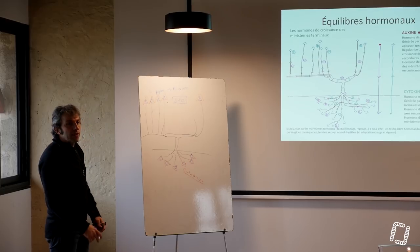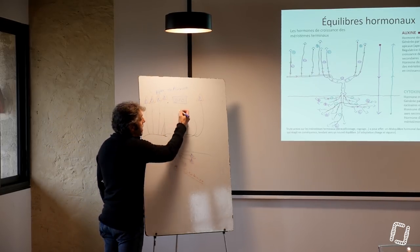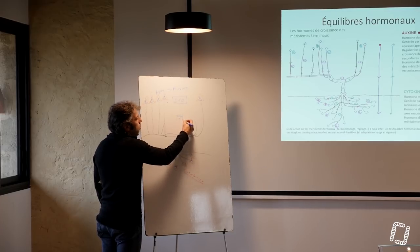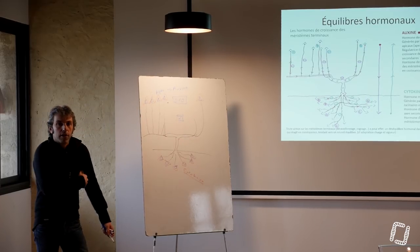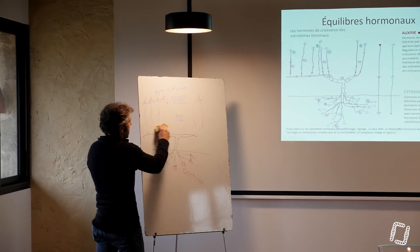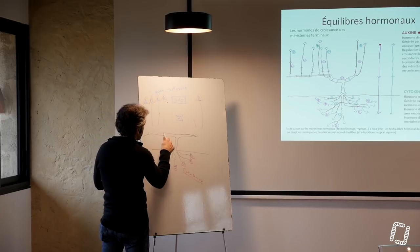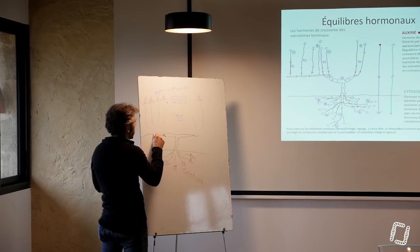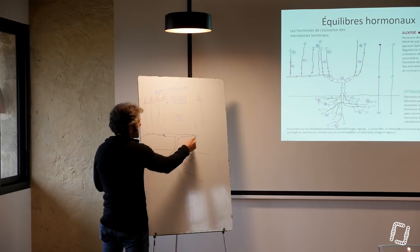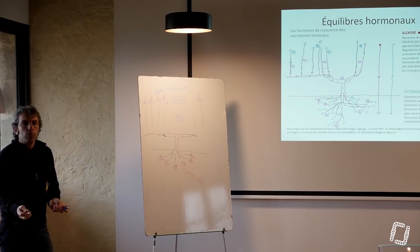Et d'un coup, en taillant, on va passer de 210 au même chiffre que l'année dernière, sept bourgeons francs. D'accord? Puisqu'on va tailler et on va se retrouver avec notre nouvelle baguette, avec nos bourgeons sur notre baguette et nos bourgeons sur notre courson. On se retrouve avec sept bourgeons francs.